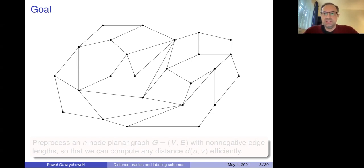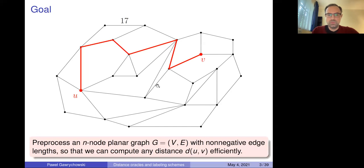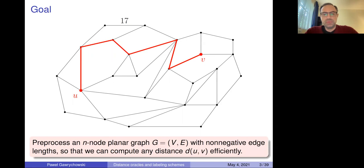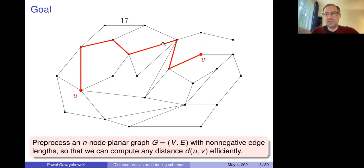For general graphs it's hard. A map could be a planar graph — a graph that can be drawn in a plane so that the edges don't intersect. The goal is to preprocess such a planar graph on n nodes. Each edge has a weight, and the weight doesn't really have to be a distance between points in the plane. You preprocess this graph for queries that compute distances between any pair of nodes u and v — that's the shortest path. We also want to find the path itself on demand.